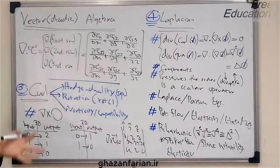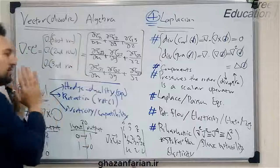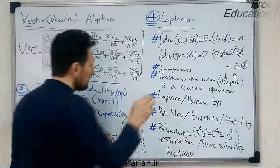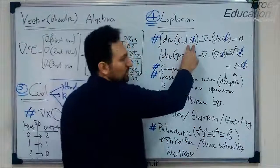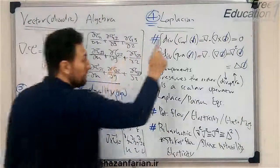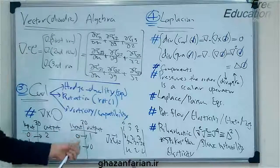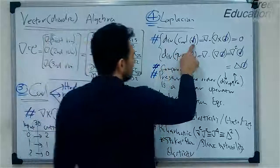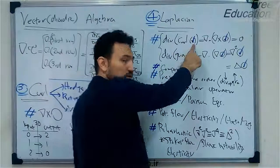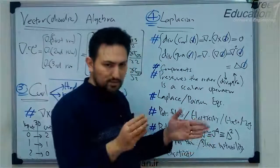The fourth important operator in vector algebra is the Laplacian operator. One important identity, based on the definition of the divergence and the curl operator, is that the divergence of curl of any quantity is zero. The input quantity of a curl can be at most second-order in three-dimensional space and at most first-order in two-dimensional coordinates, so this symbol can be a vector, a second-order tensor, or a scalar.